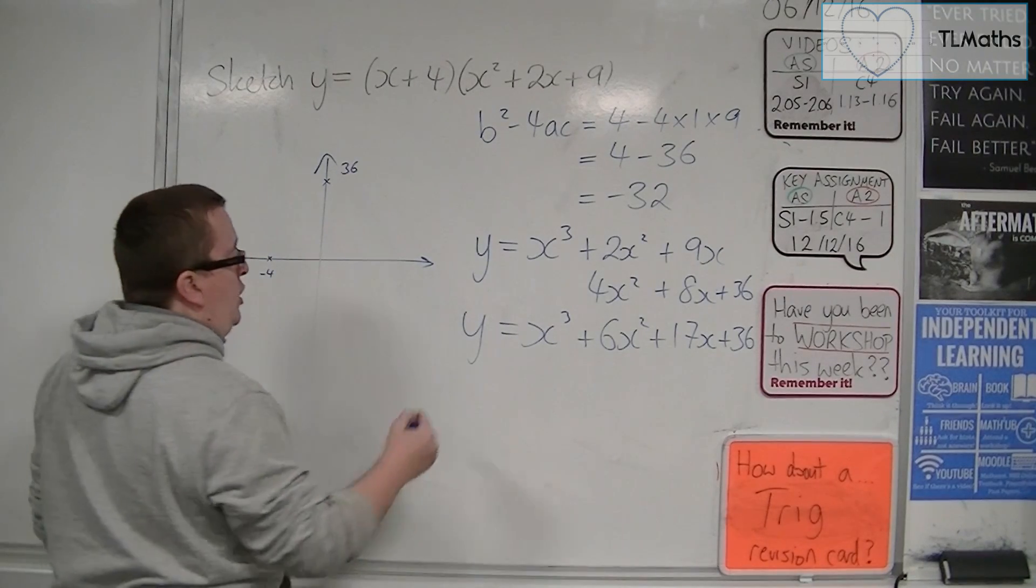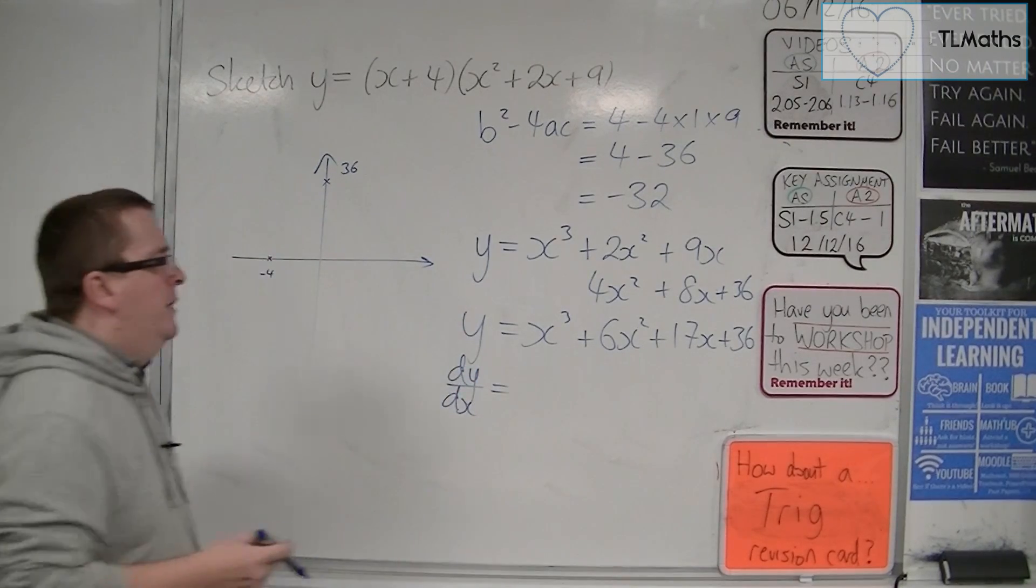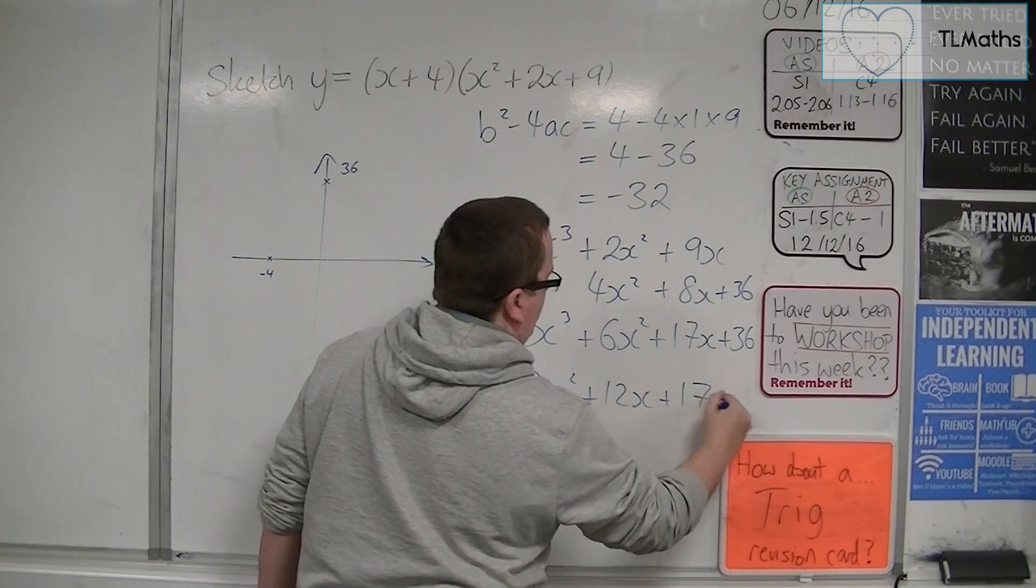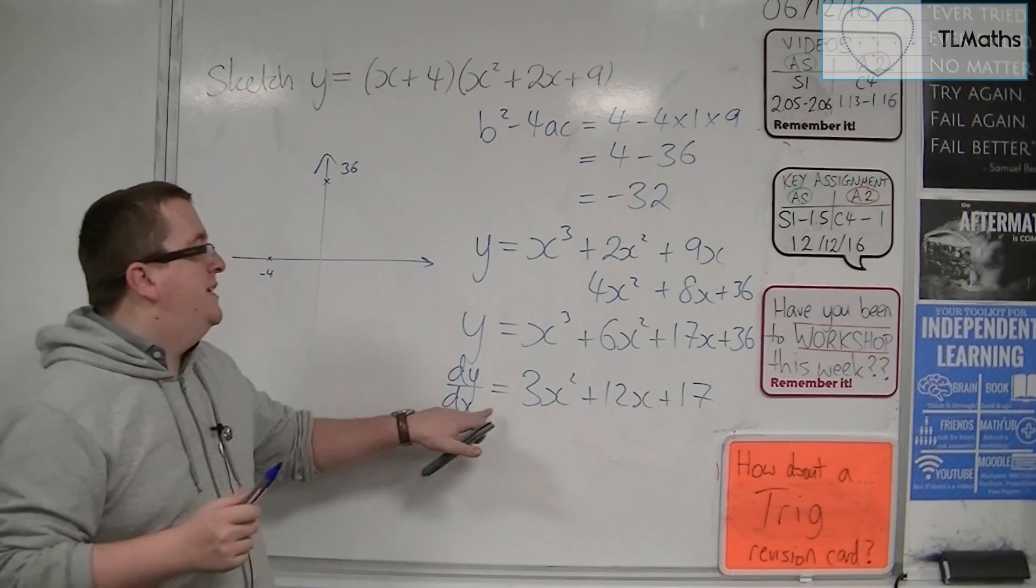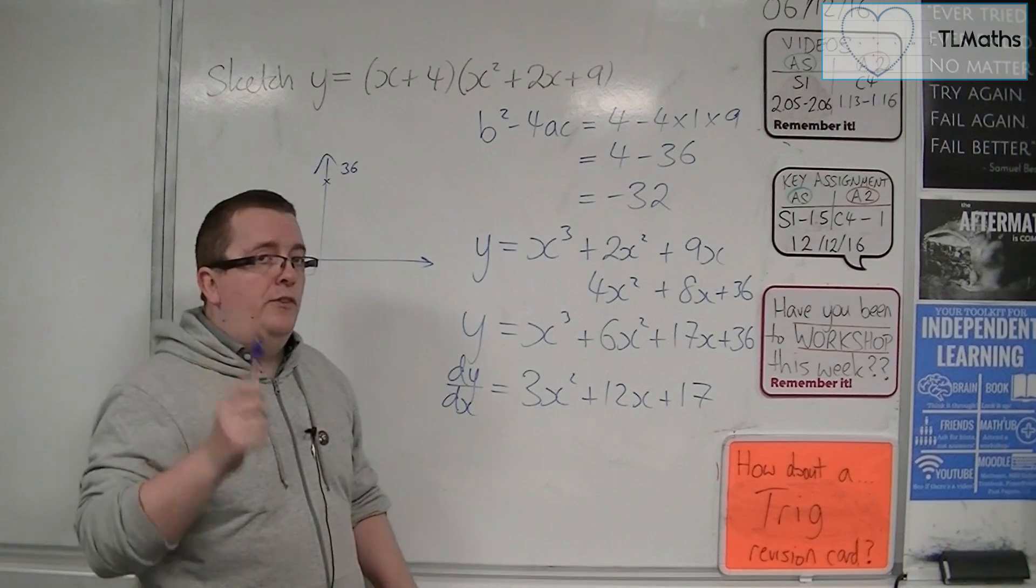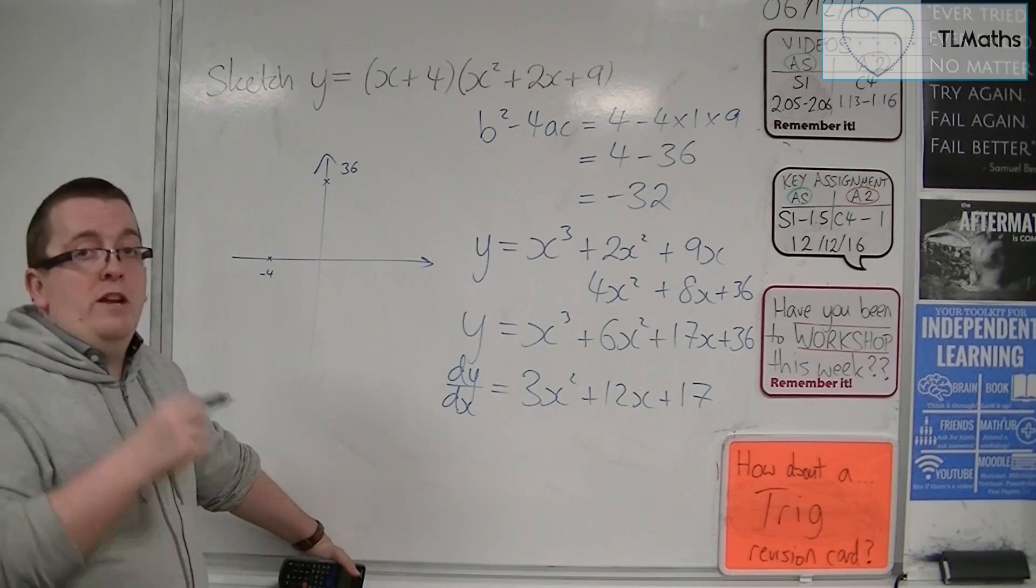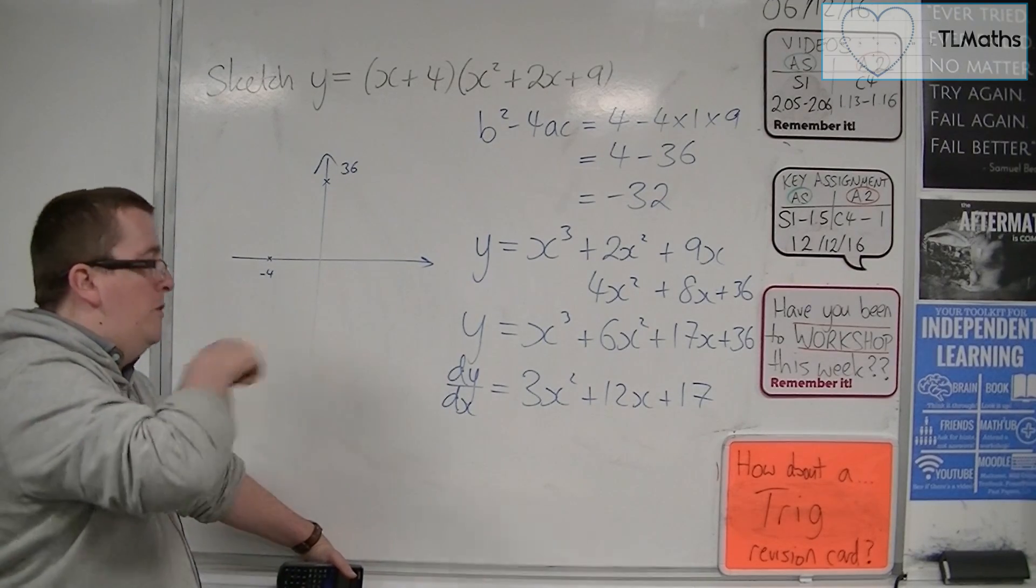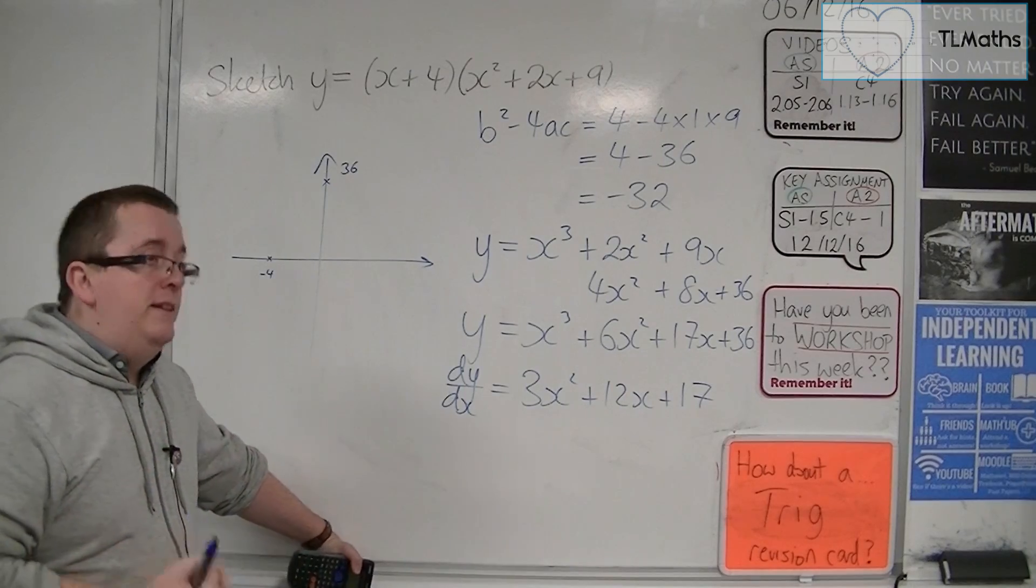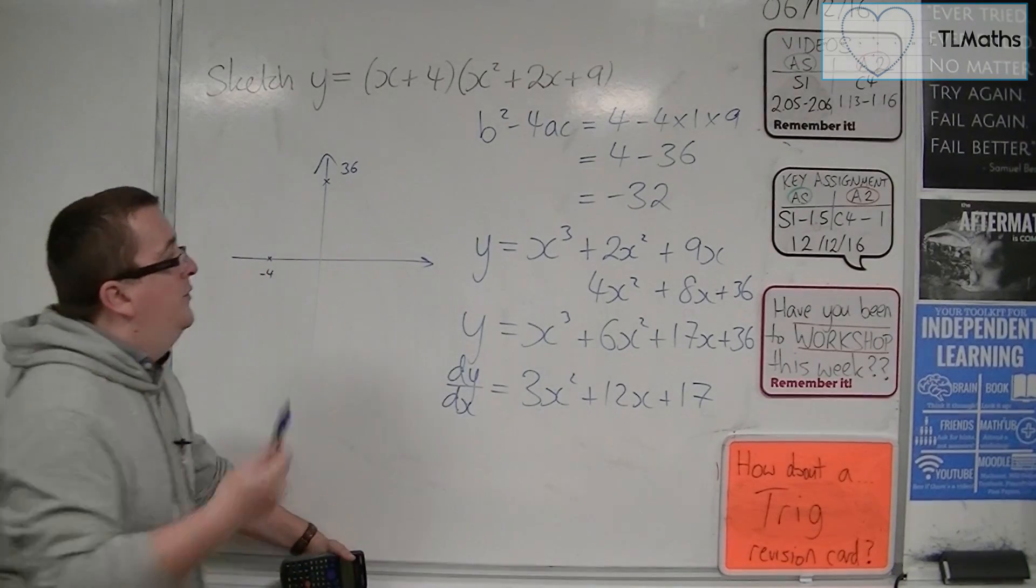We would then have to differentiate it. The reason why I'm going to differentiate it is I want to find stationary points. So dy by dx is equal to 3x squared plus 12x plus 17. Now, I need to determine if this can ever be 0. If it can be 0, then there are stationary points. Now, to determine whether it can be 0, whether it crosses effectively the dy by dx, or whether it crosses that axis, I can use the discriminant again. So if the discriminant is negative, then this will have no solutions.